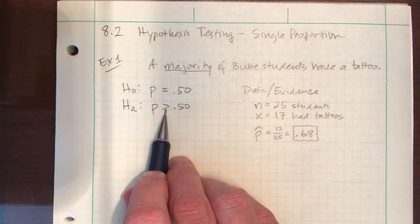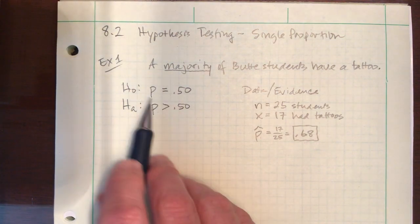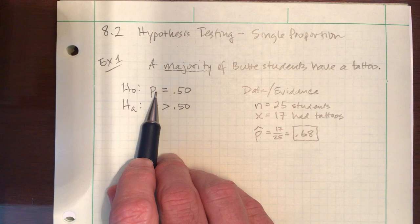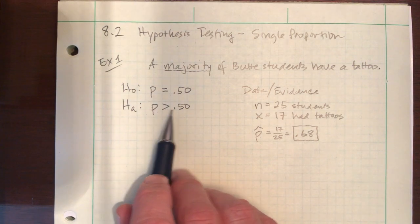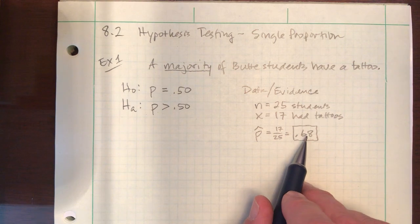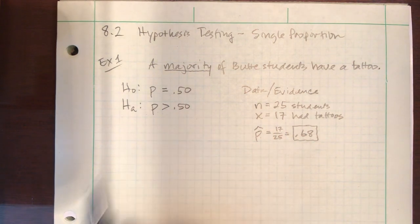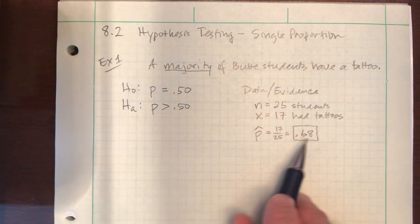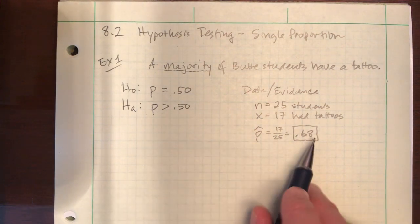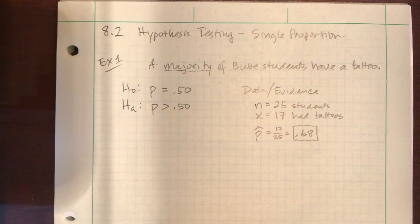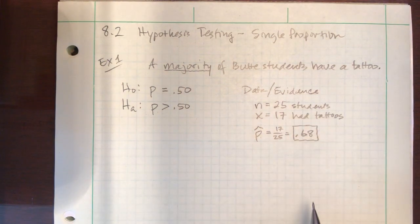What should always be true right now is that your evidence should support your alternative. It doesn't mean it's true yet, but if I'm assuming the null is true, why would I ever switch to the alternative? I would if my evidence is strong enough to suggest that this could possibly be true. And of course 68 percent is greater than 50 percent. A majority of students in this sample have a tattoo. So things are moving in the right direction.